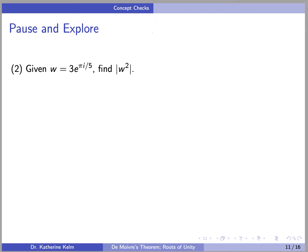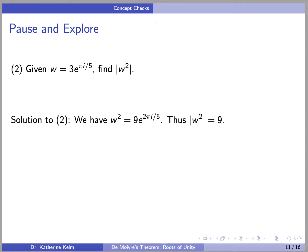Next concept check: given w = 3·e^(πi/5), what is |w²|? w² = 9·e^(2πi/5). Thus the absolute value of w² is 9.